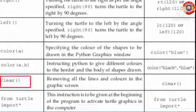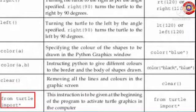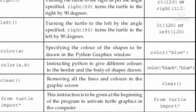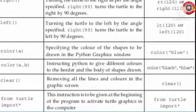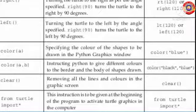The next instruction is 'clear' — it is used to remove all the lines and colors in the graphic screen. The last instruction is 'from turtle import *'. This is a very important instruction usually used at the beginning of the Python program. It is used to import the turtle software into Python graphics, because Python doesn't support geometric shapes on its own, so we import the turtle module to support geometrical shapes.